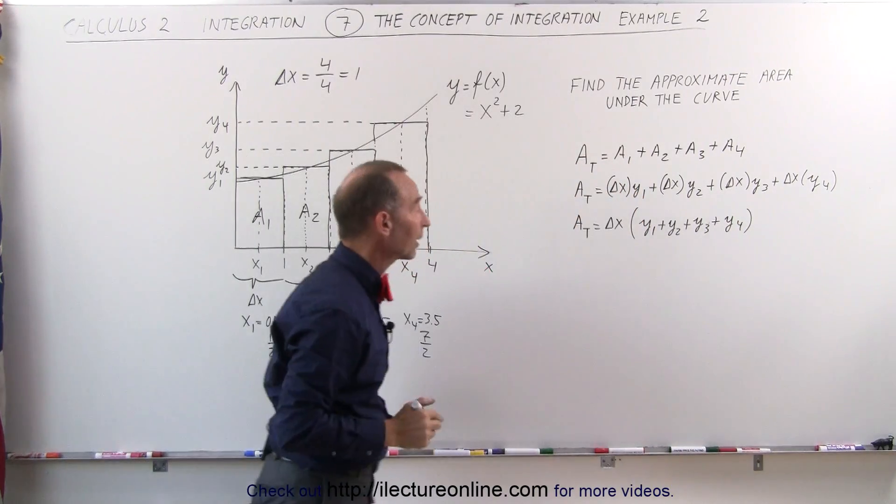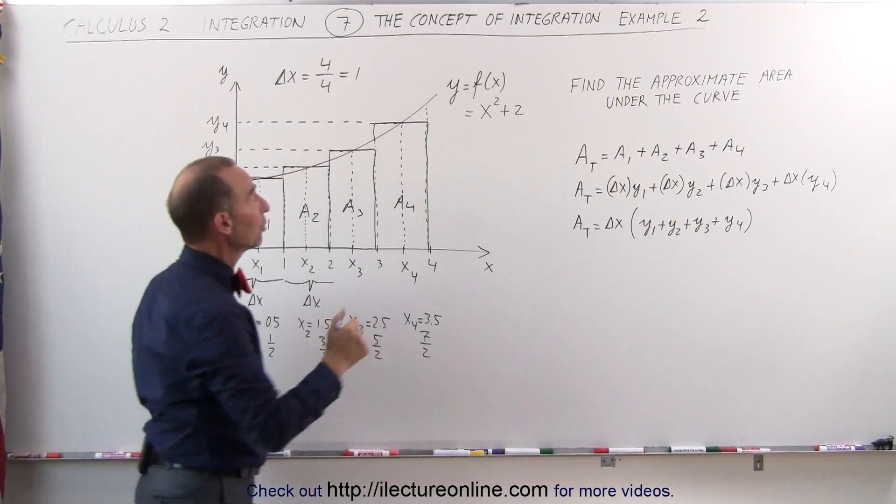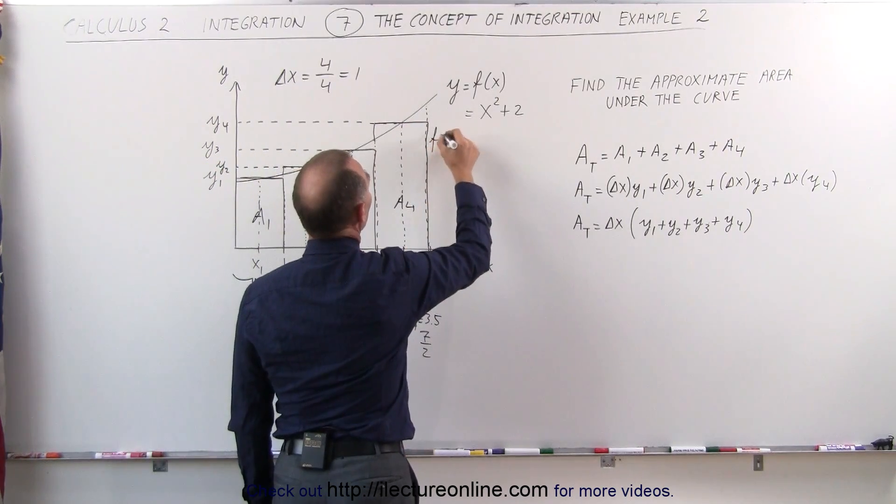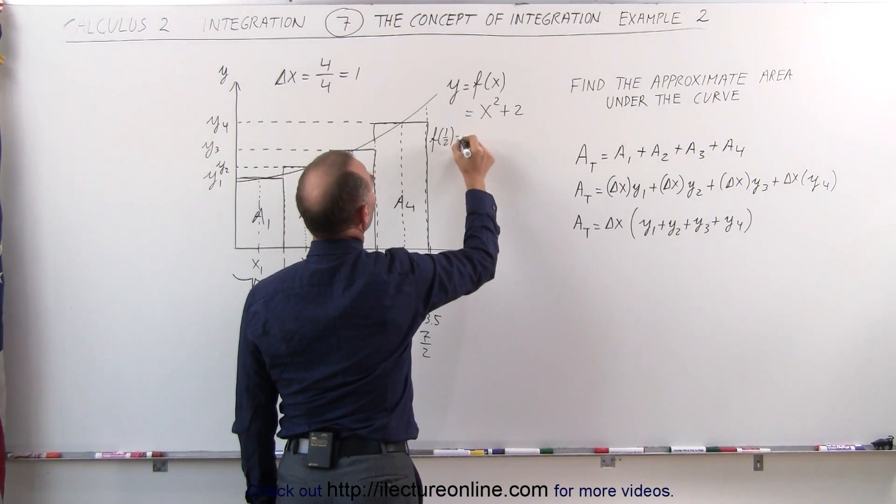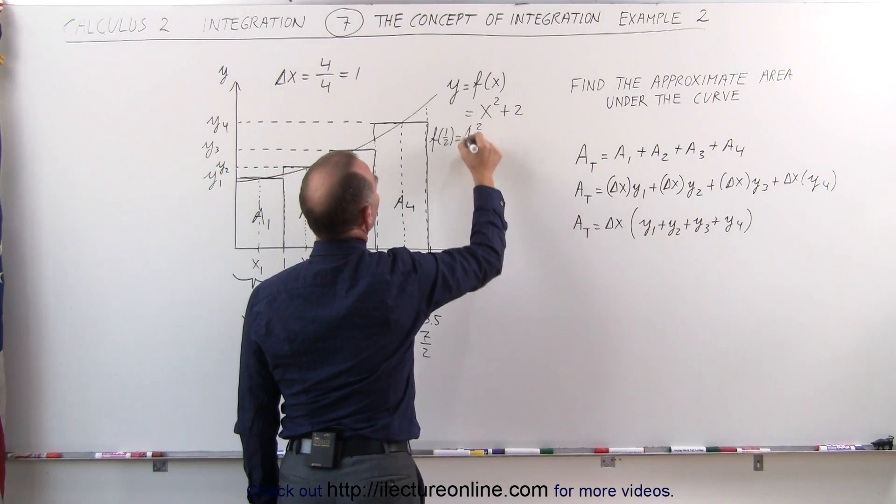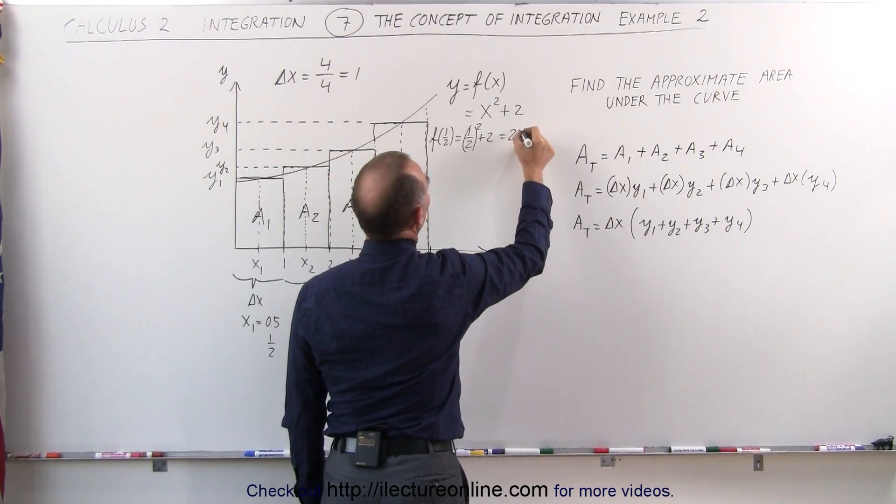Now, how do we find the height of each rectangle? We find them by plugging the x values into our equation, which means that f evaluated at x equals 1/2 is equal to (1/2) squared plus 2. 1/2 squared is 1/4, that would be 2 and a quarter, or 9/4.